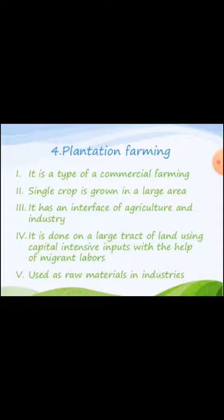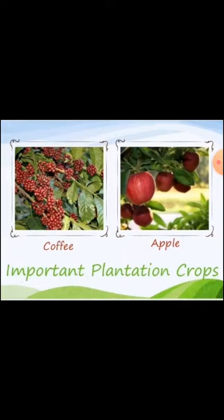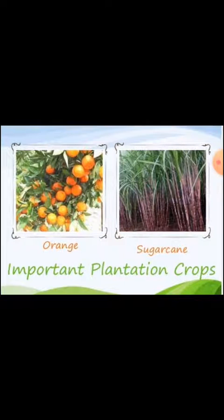Plantation farming is a type of commercial farming where a single crop is grown in a large area. It has an interface of agriculture and industry — raw materials are grown by agriculture and the output is used as raw material in industries. It is done on large tracts of land using capital intensive inputs with the help of migrant labor. Important plantation crops include coffee, tea, apple, orange and sugar cane.